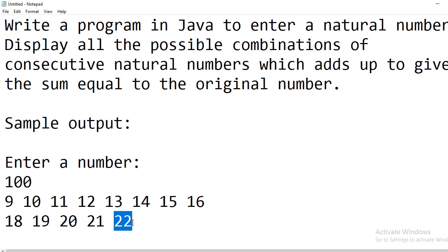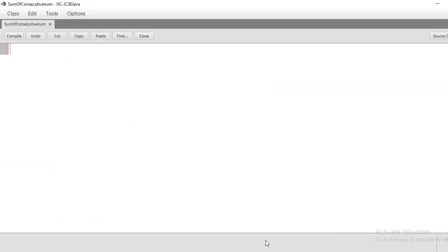A given natural number can be obtained by adding a combination of natural numbers from a particular number till another number. That is the aim of this program — we have to print all the combinations of natural numbers that add up to the given original natural number. Let us move to the program.